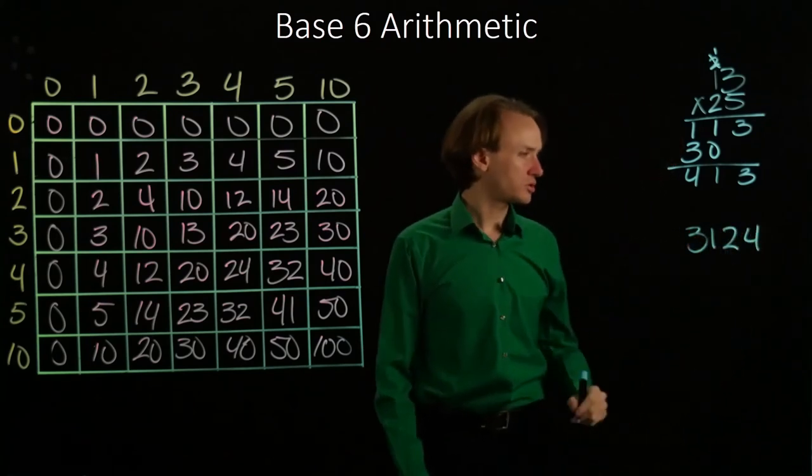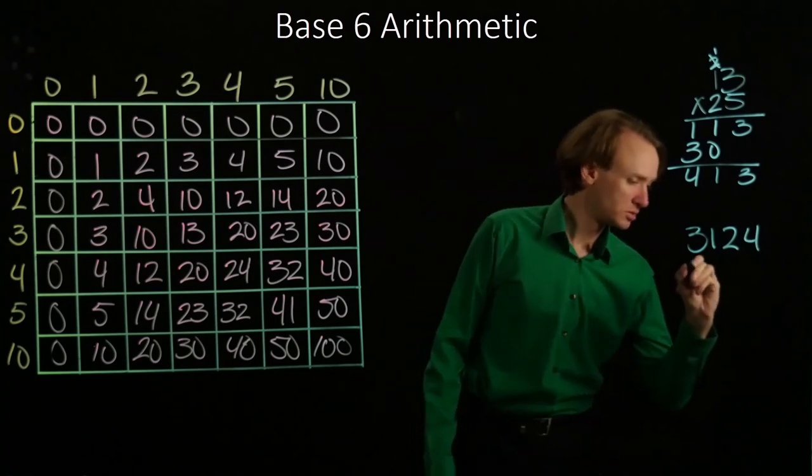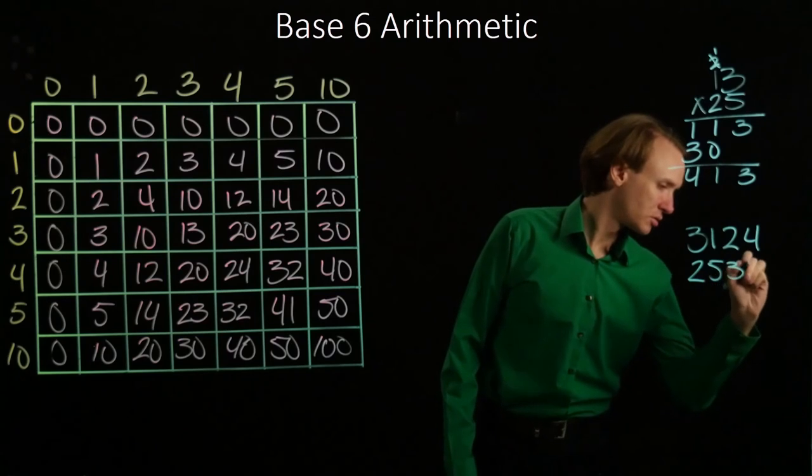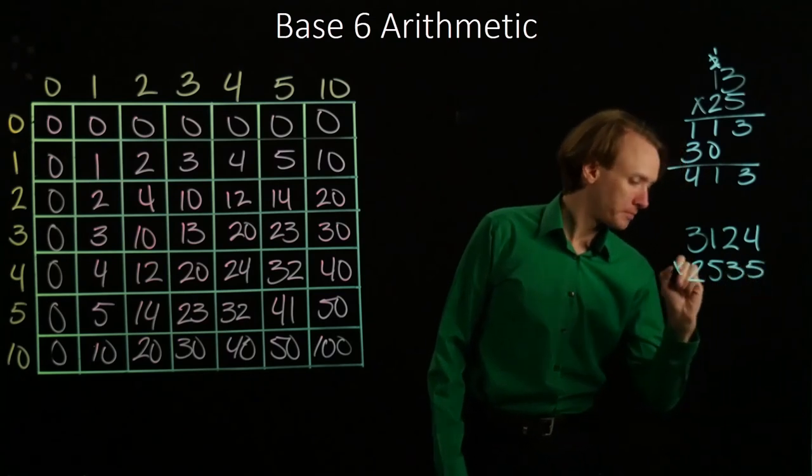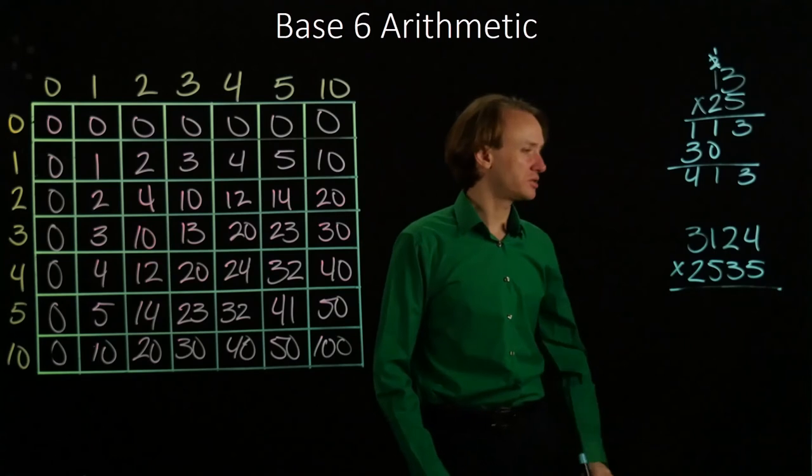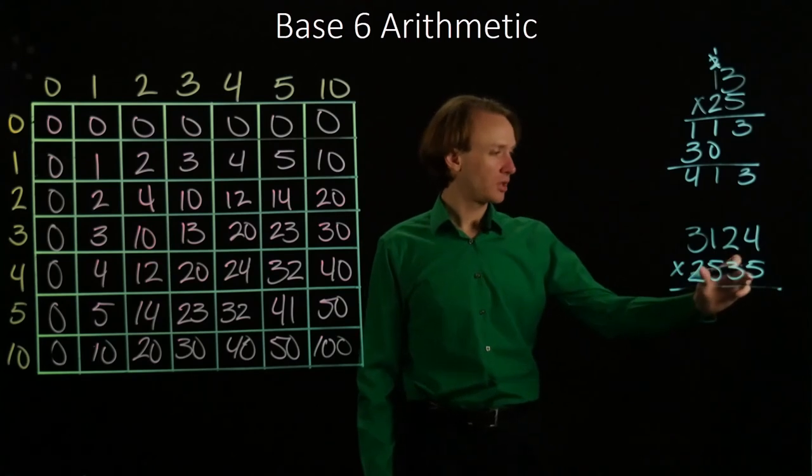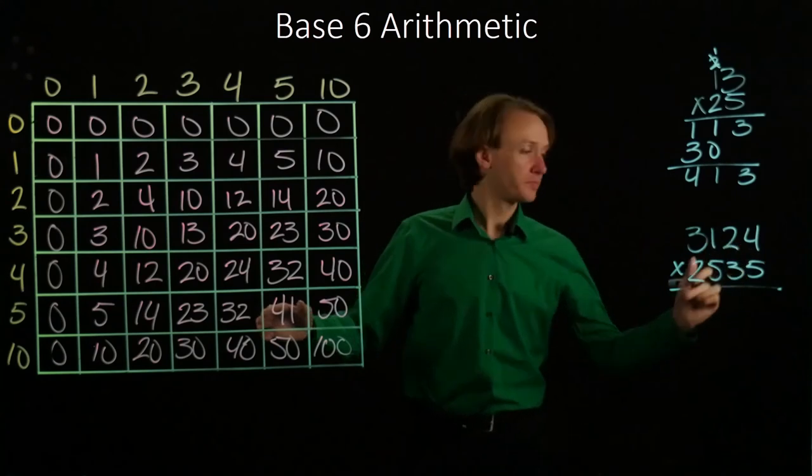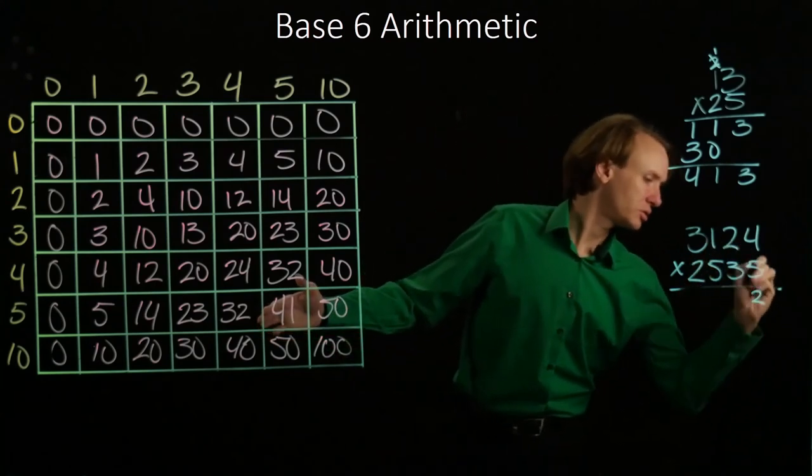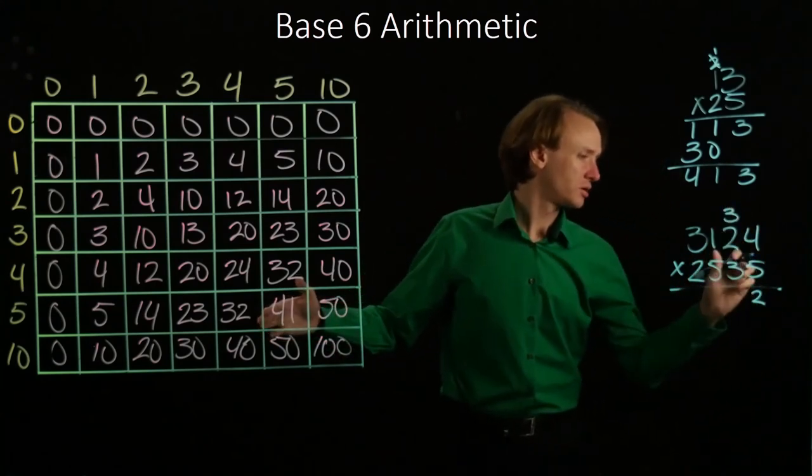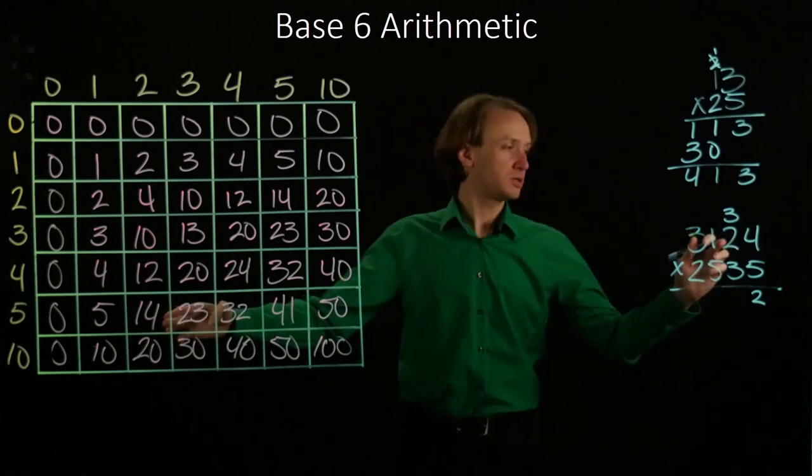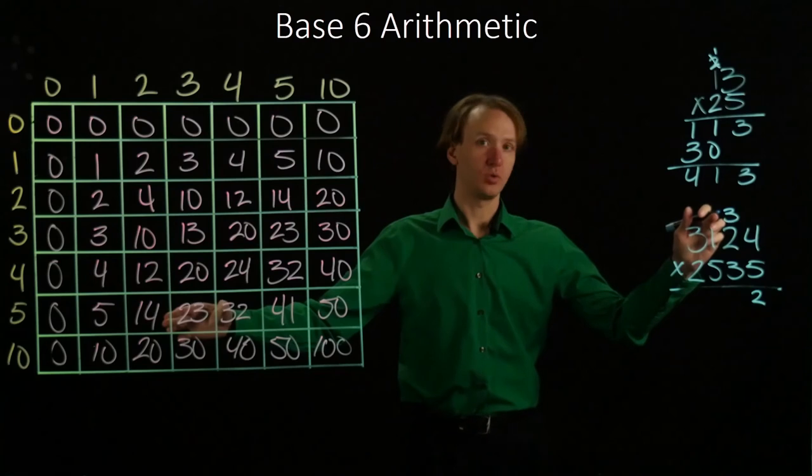But we can also do larger numbers, like these two. So I have 5 times 4 is 32. So I'll write down the 2, carry the 3. 5 times 2 is 14, plus 3 will give me 21.